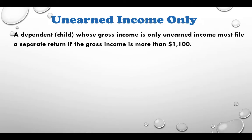Unearned income only. The IRS says that a dependent child whose gross income is only unearned income must file a separate return if the gross income is more than $1,100. Unearned income is investment income such as dividends, interest, capital gains, and others — for example, if your child inherited an IRA, the distribution from the IRA will be counted as unearned income as well.